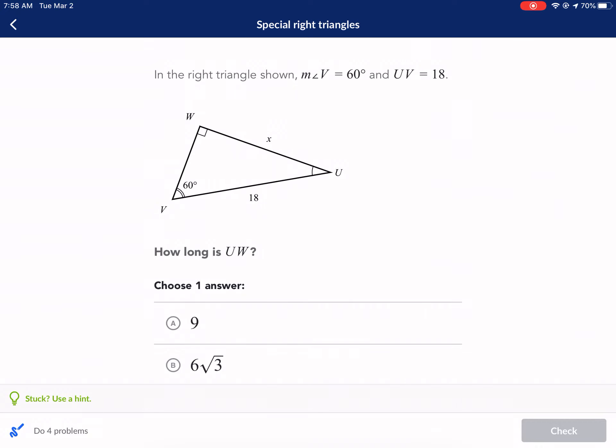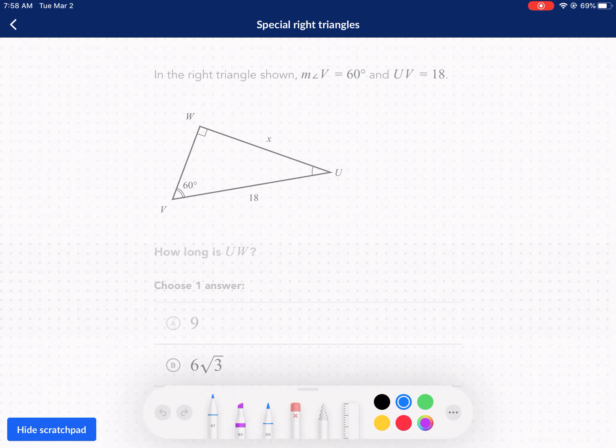Welcome everyone to a Khan Academy tutorial. This is Mr. West and we are covering special right triangles today. Here we have in the right triangle shown, measure of angle V is 60 degrees, UV equals 18. How long is UW? All right, let's break down what a special right triangle this is.